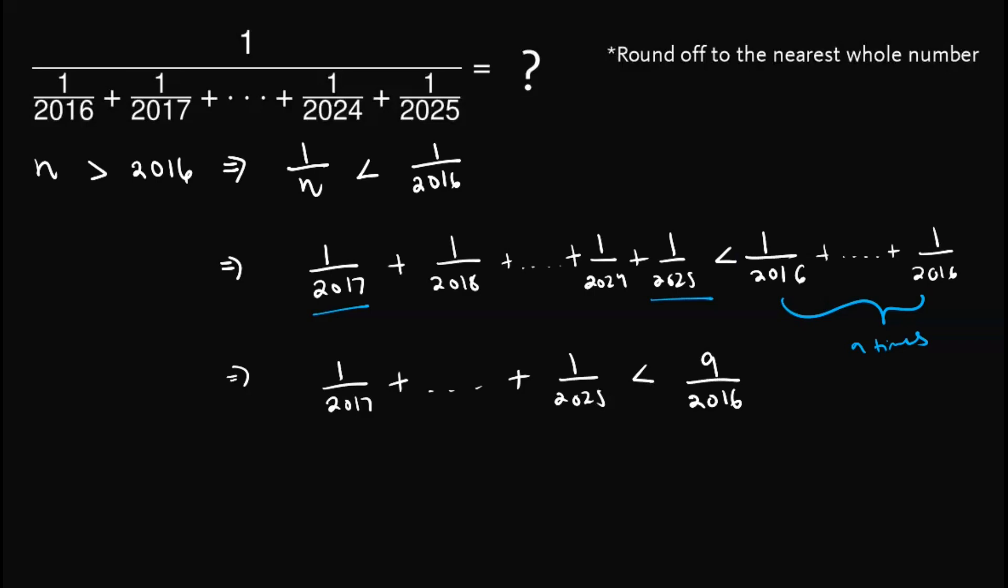Now, to obtain the same denominator, we simply add 1 over 2016. Note that we can do that since we're adding the same number to both sides of the inequality. So we have 1 over 2016 plus 1 over 2017 up until 1 over 2025 is less than 10 over 2016.